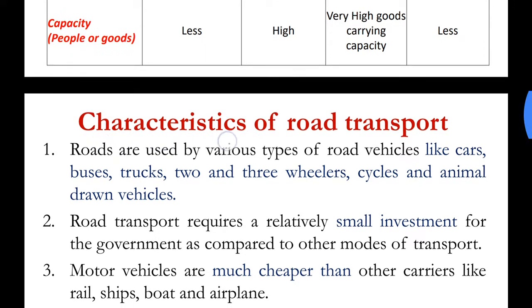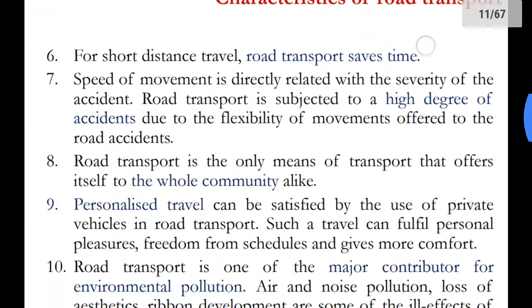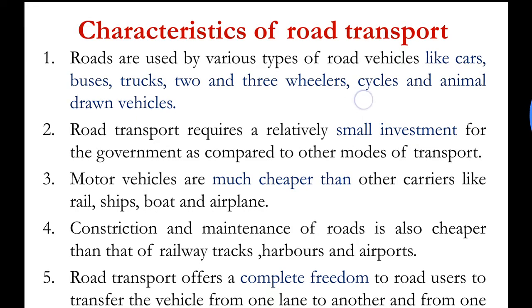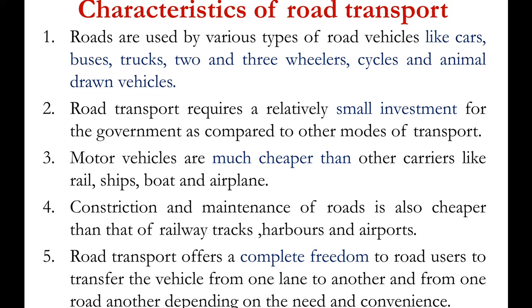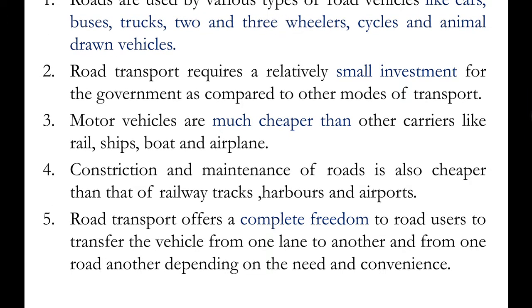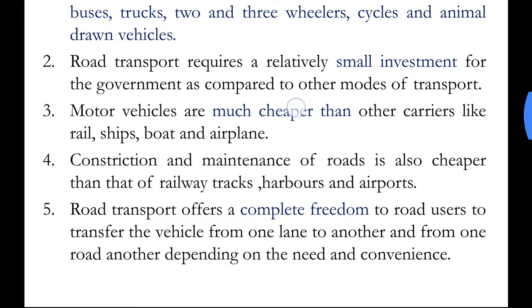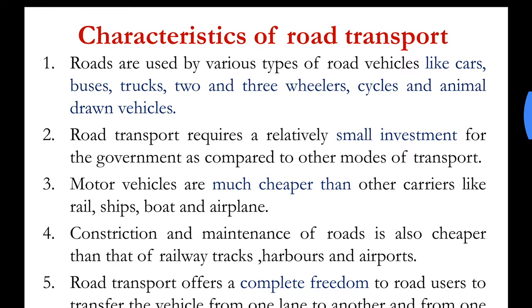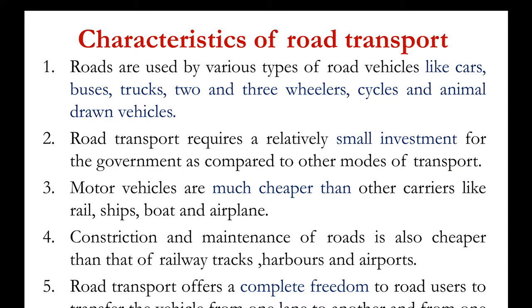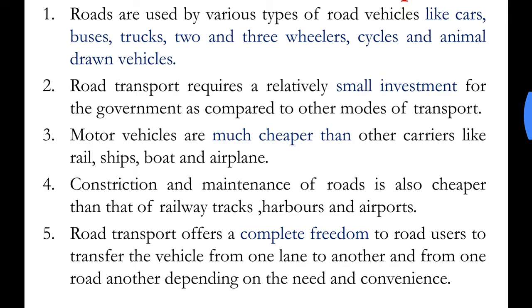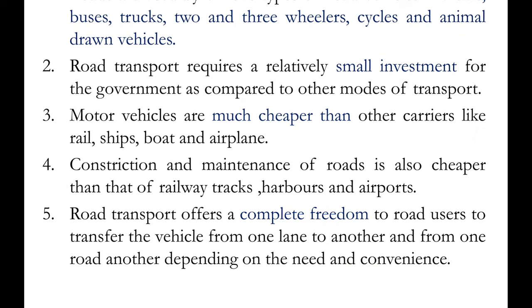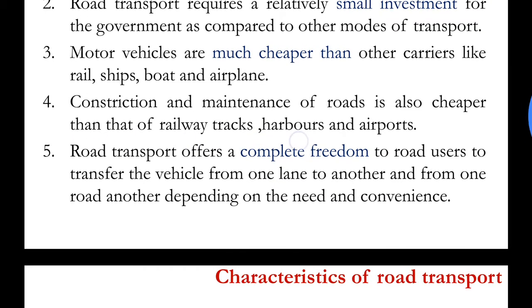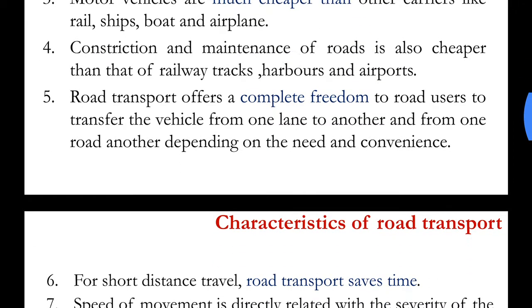The next topic is characteristics of road transport. Roads are used by various types of road vehicles like cars, buses, trucks, 2 and 3 wheelers, cycles and animal drawn vehicles. Road transport requires a relatively small investment for the government as compared to other modes. Most citizens can afford some mode of travel when using roadways. Motor vehicles are cheaper than other carriers like rail, ships, boats and aeroplanes. Construction and maintenance of roads is also cheaper than that of railway tracks, harbors and airports.